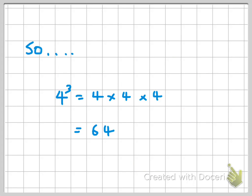So three times three is nine, times three is 27. And four to the power of three, or four cubed, is just four times four times four, which equals 64.